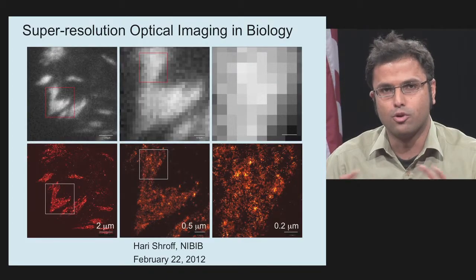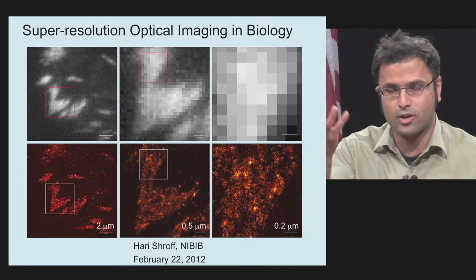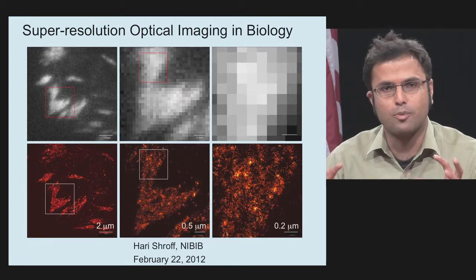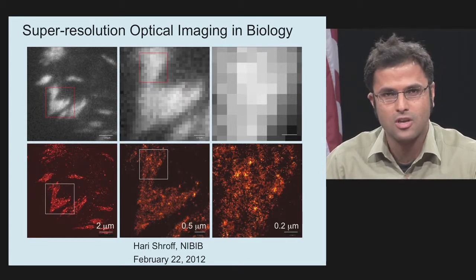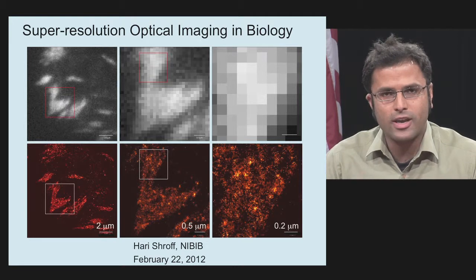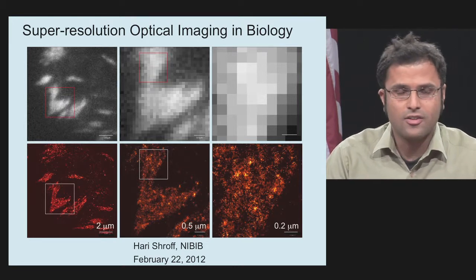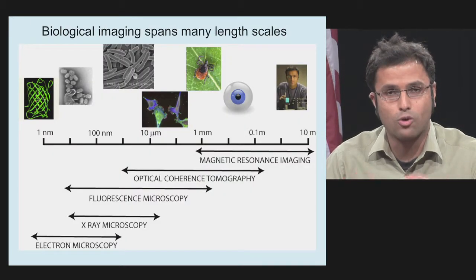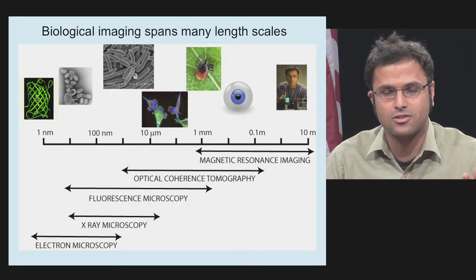I'm going to spend a brief amount of time today telling you about using a light microscope to convert a series of blurry diffraction-limited images, like the ones at the top of the slide, to much, much sharper, so-called super-resolution images. But before I get into super-resolution, I think it's worthwhile to remind ourselves that biology spans orders and orders of magnitude in length scales.